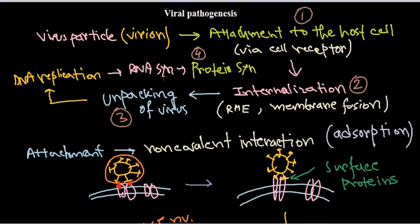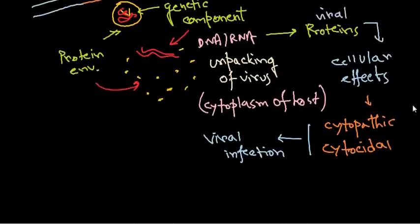Welcome. In the previous videos we talked about how bacterial pathogenesis occurs. We covered four major stages: attachment to the host cell, internalization, unpacking of the virus particles, and fourth, DNA genome replication and protein synthesis. In this video we'll be talking about viral protein synthesis.